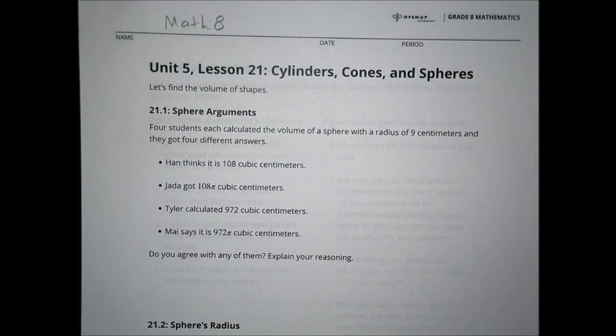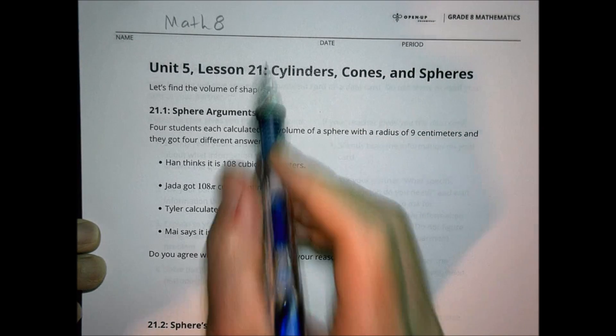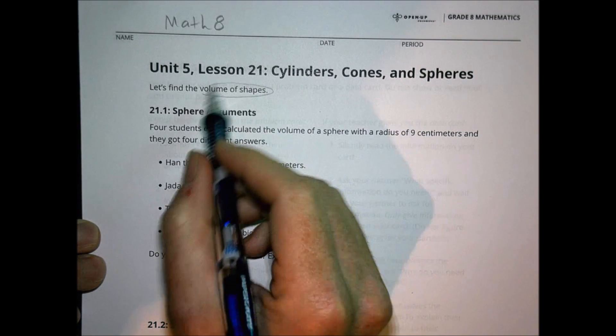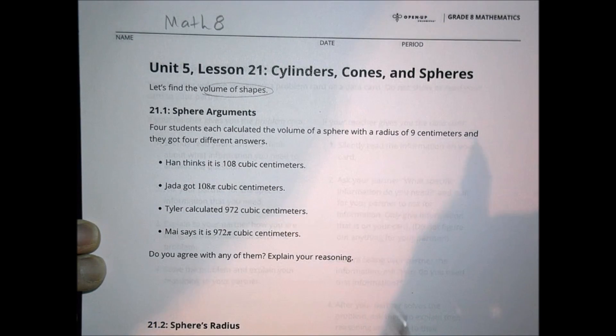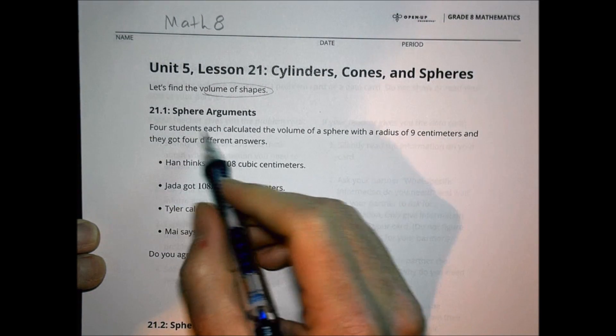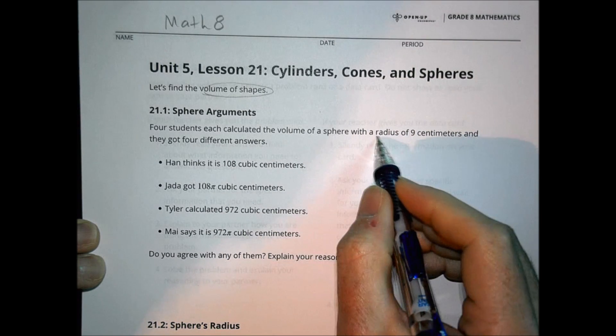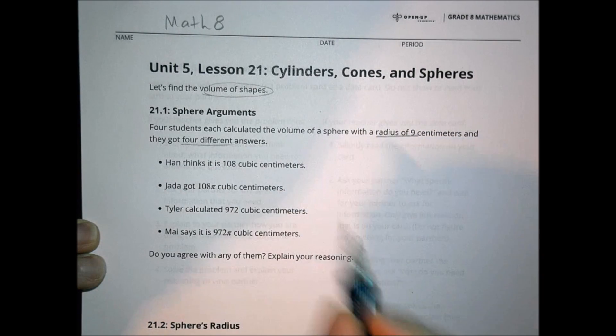Hey there, this is Math 8, Unit 5, Lesson 21 on Cylinders, Cones, and Spheres, and we're going to do a lot of work today with volumes of all those shapes. So first of all, we had a little sphere argument where four students calculated the volume of a sphere with a radius of 9 centimeters, and they got four different answers.